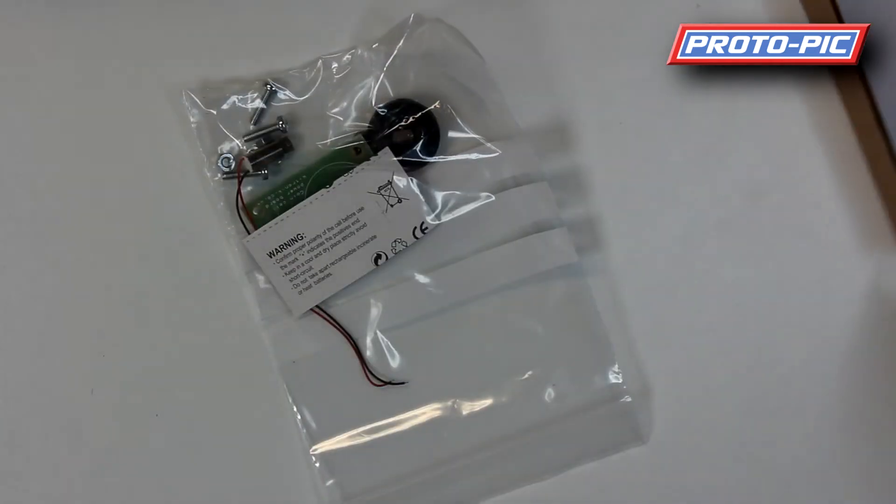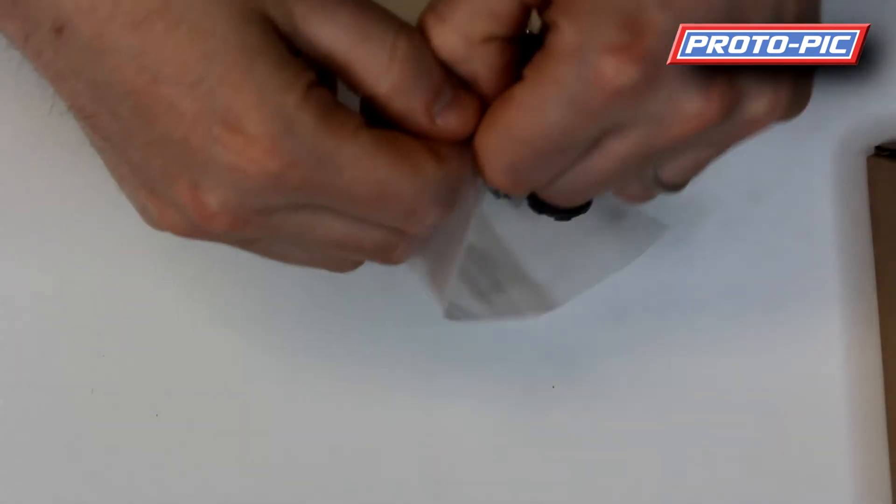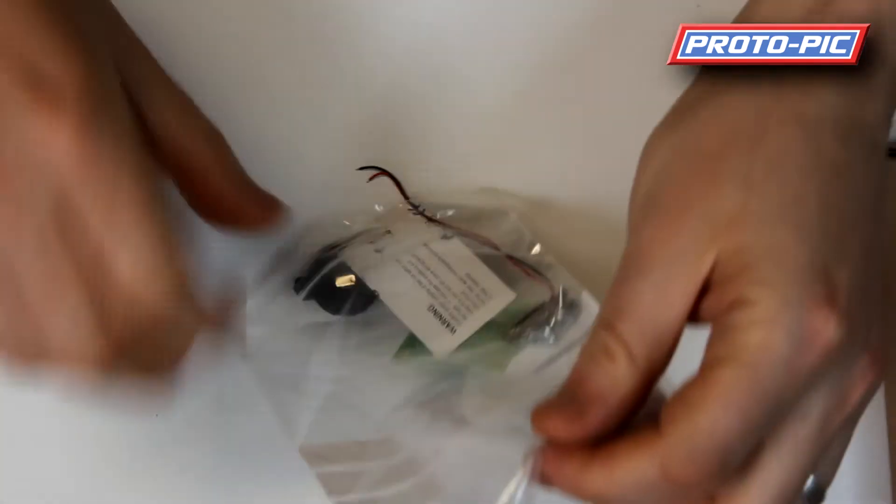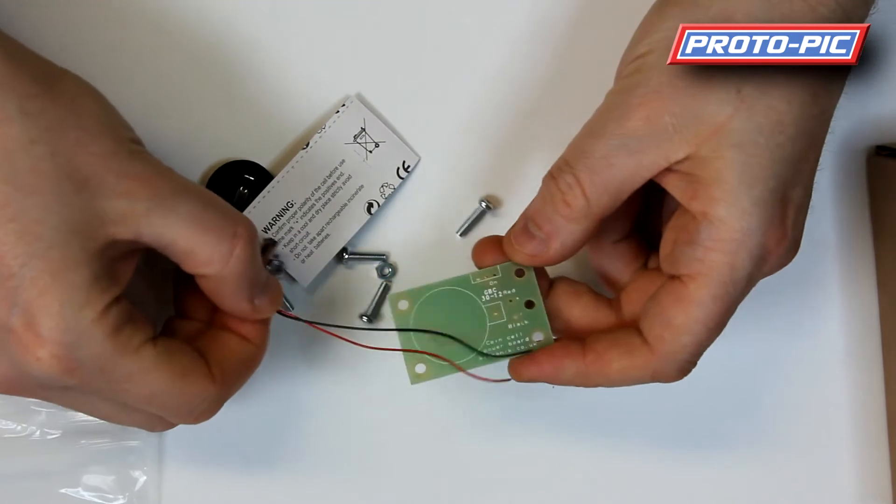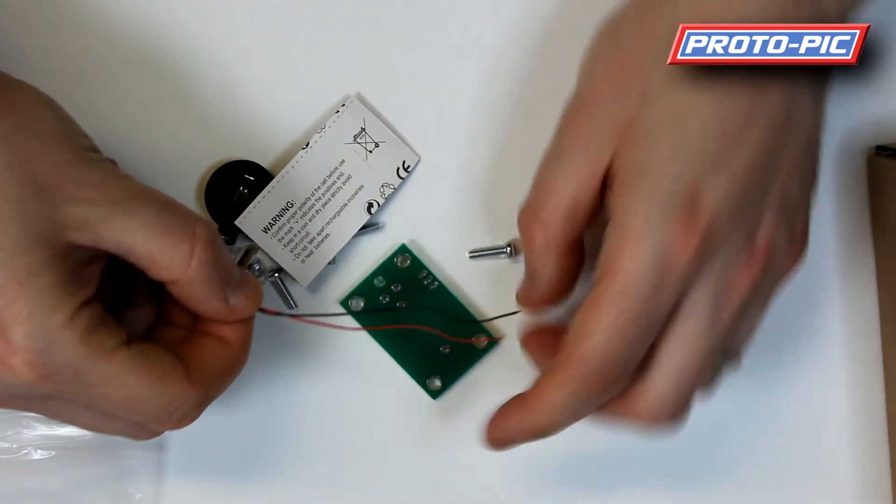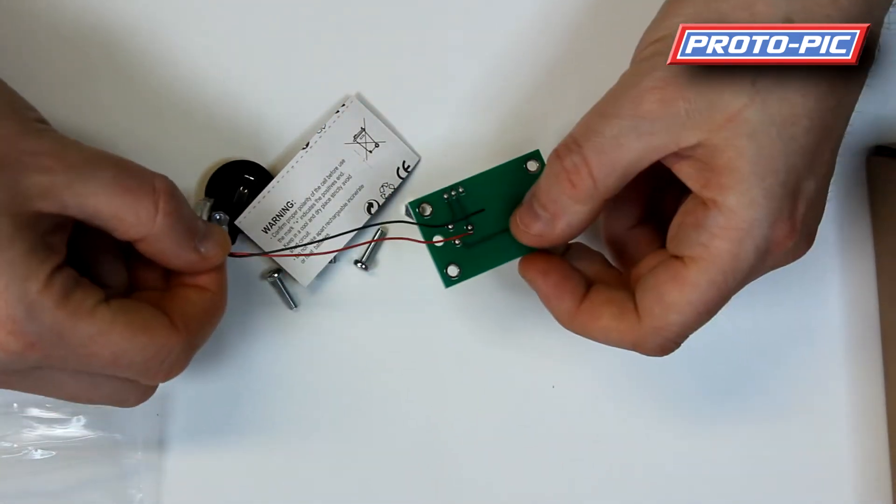So in the kit you receive, I'll just show you everything that you get. This is how the kit comes in a nice cardboard box and you get a little PCB board and all you have to do is solder the motor onto the appropriate terminals on the PCB.